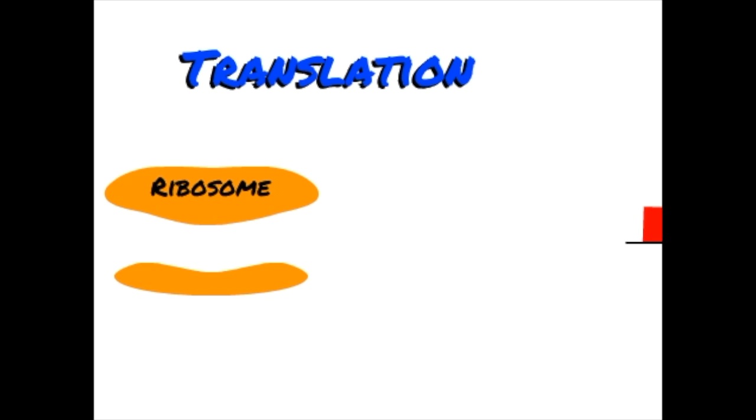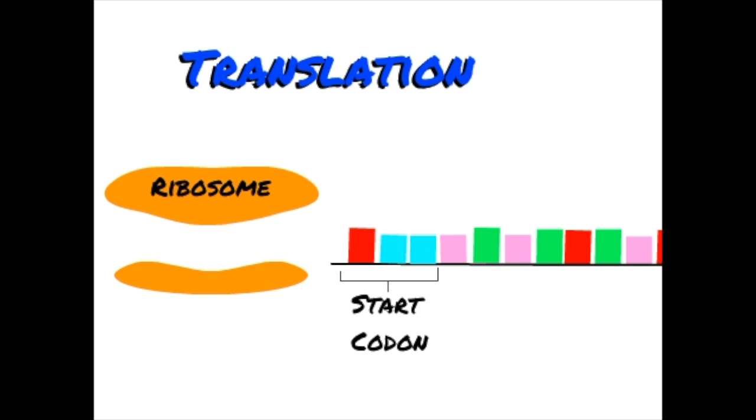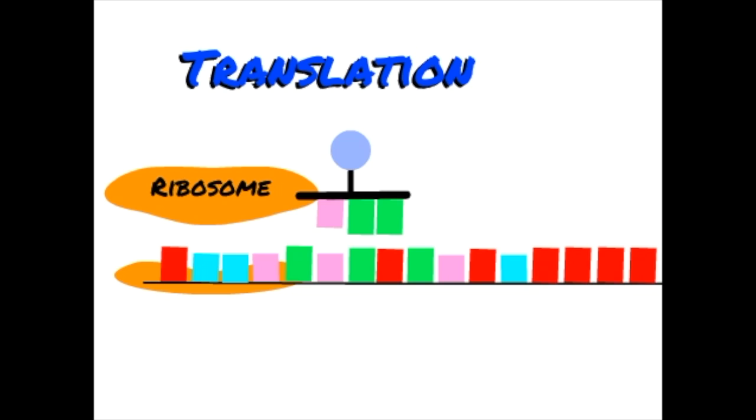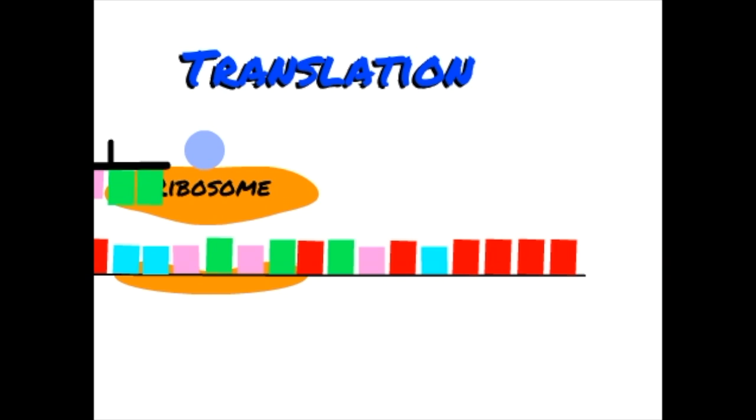The ribosome and the initiator tRNA will attach to the mRNA at a place called the start codon. Once the initiator tRNA attaches to the start codon, a second tRNA will bond with the second codon on the mRNA, and the ribosome will remove the amino acid and bond it with the amino acid on the next tRNA.